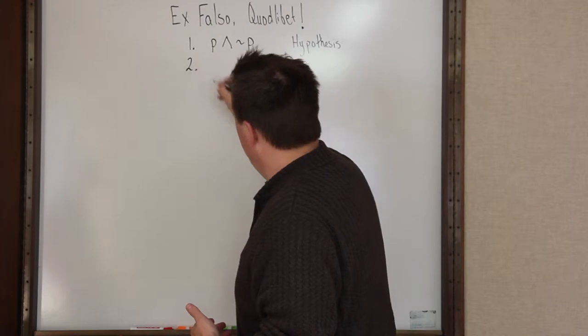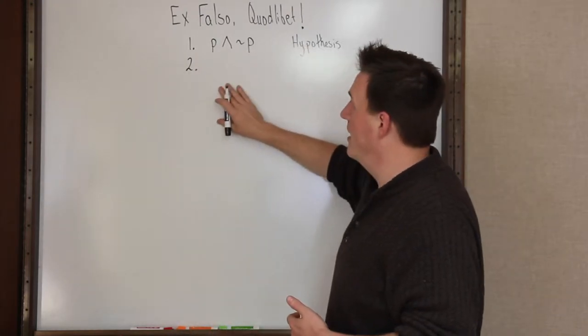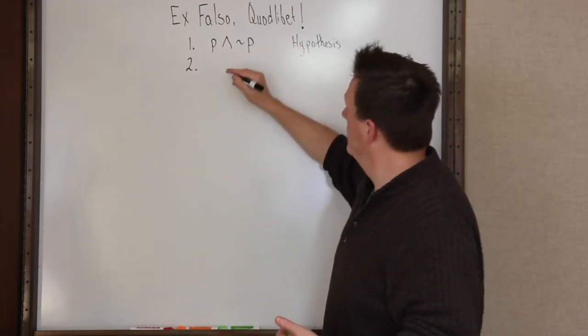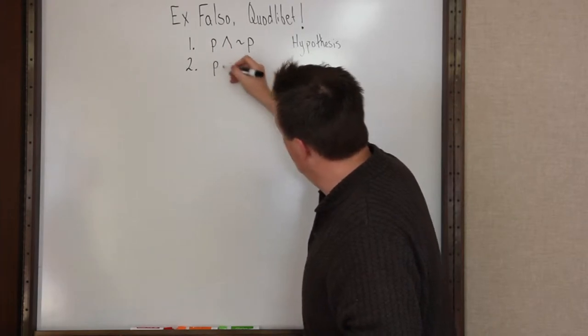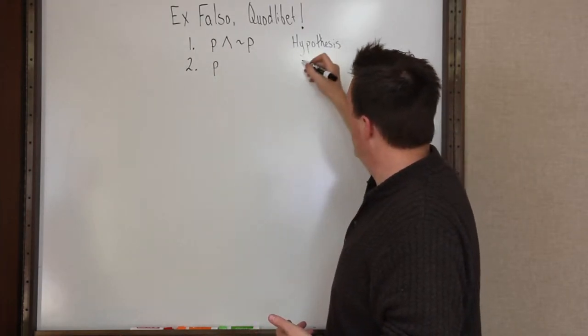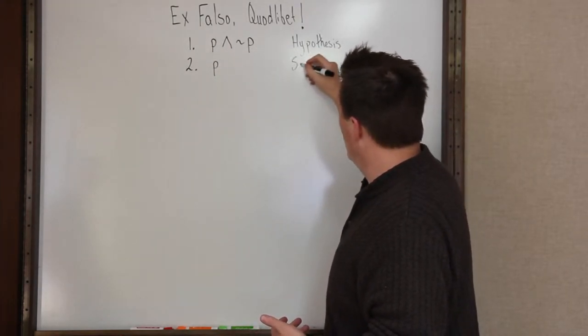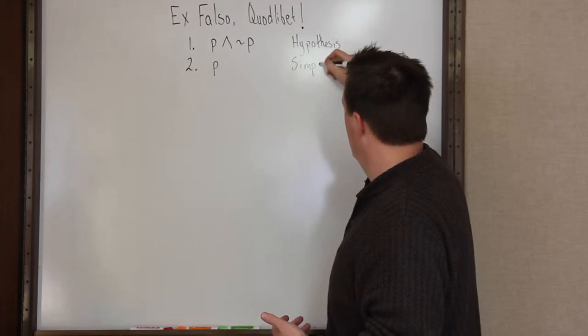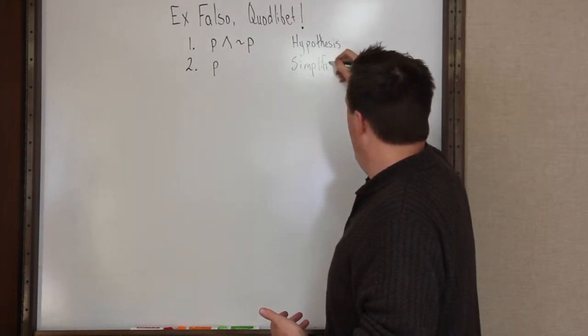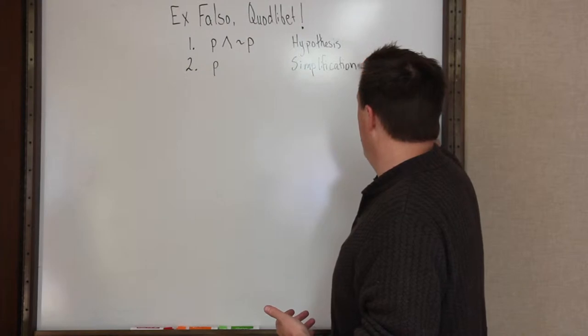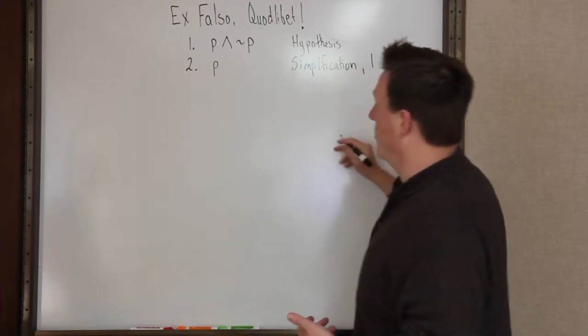From that hypothesis, we can derive just P. And the way you do that is with the rule that's called simplification. And you apply the rule of simplification to line number one.